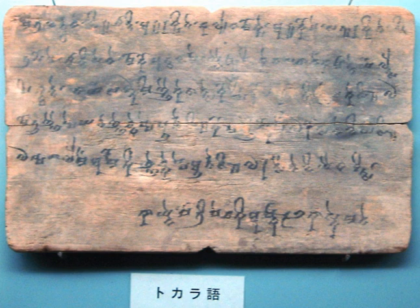The alphabet the Tocharians were using is derived from the Brahmi alphabetic syllabary and is referred to as slanting Brahmi. It soon became apparent that a large proportion of the manuscripts were translations of known Buddhist works in Sanskrit, and some of them were even bilingual, facilitating decipherment of the new language.